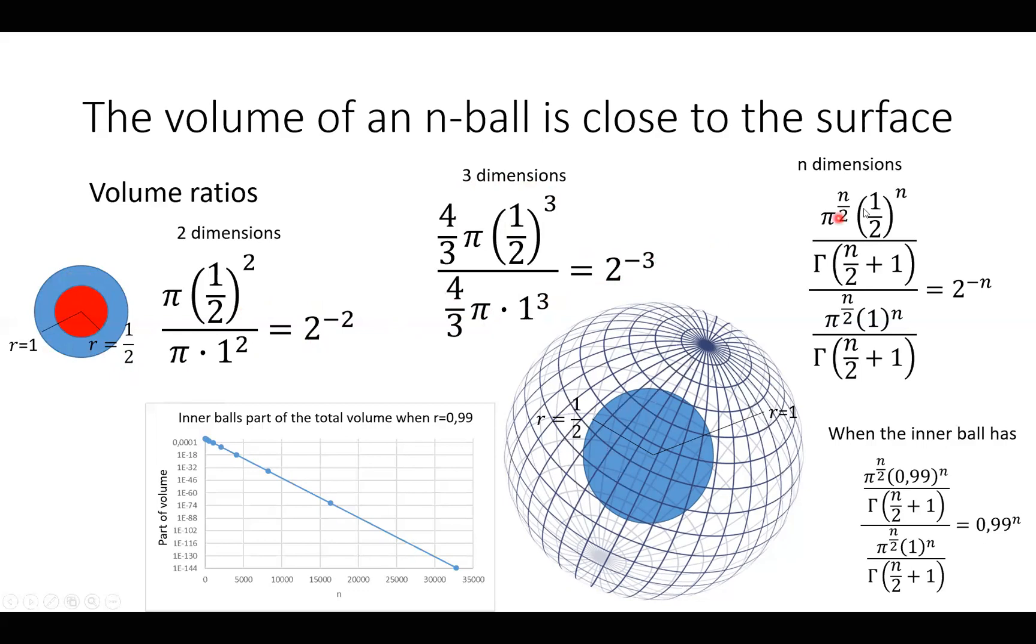And we go to n-dimension using the inner ball with r or the radius of a half and the outer ball the radius of 1. It's 2^(-n). So most of the volume will be close to the surface here.